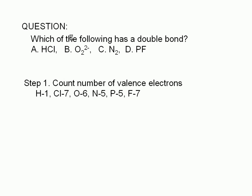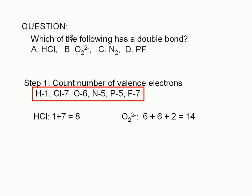To summarize: hydrogen has one valence electron, chlorine has seven, oxygen has six, nitrogen has five, phosphorus has five, and fluorine has seven. Therefore, a hydrogen chloride molecule has a total of eight valence electrons — one from the hydrogen plus seven from the chlorine.